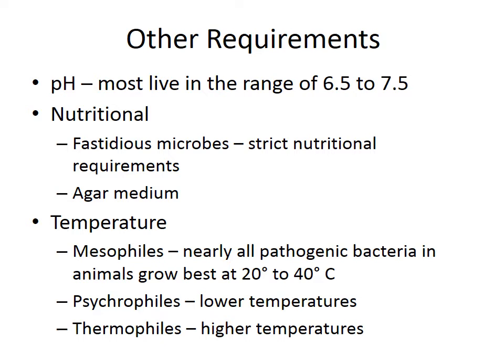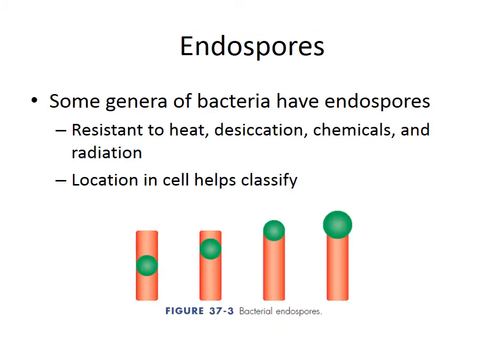When it comes to temperature requirements, there are three categories. Mesophiles — and this is nearly all pathogenic bacteria in animals — grow best between 20 and 40 degrees Celsius, which aligns with normal animal body temperatures. Reptiles tend to be at the lower end and mammals at the higher end. There are also psychrophiles, which thrive at lower temperatures, and thermophiles, which live at higher temperatures.